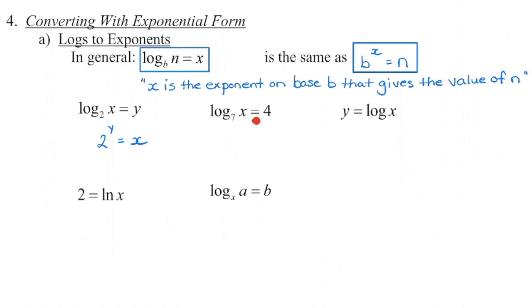In the second one: 4 is the exponent on base 7 that gives us the value of x, so 7 to the power of 4 equals x. You're going to say this so many times to yourself that it becomes habitual. The third one doesn't have a base — we recognize this is a common logarithm, which means the base is 10. So y is the exponent on base 10 that gives us the value of x: 10 to the power of y equals x.